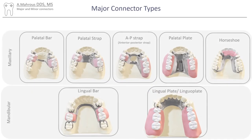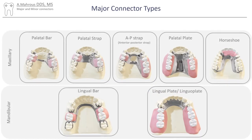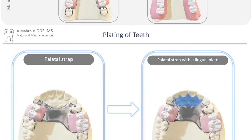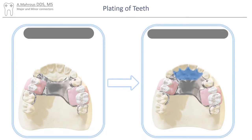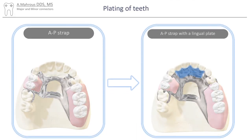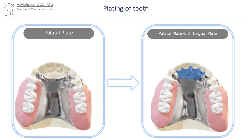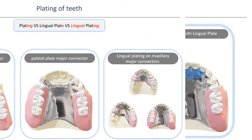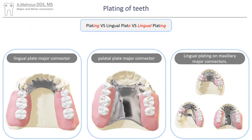Now that we're familiar with some of the major connectors, let's go over lingual plating. A piece of the major connector called the lingual plate can be extended onto the lingual surface of maxillary anterior teeth in order to splint them in cases where they are periodontally weakened. It's important to distinguish between the lingual plate major connector for mandibular arches, the palatal plate major connector for the maxillary arch, and lingual plating on the maxillary major connector's anterior teeth.